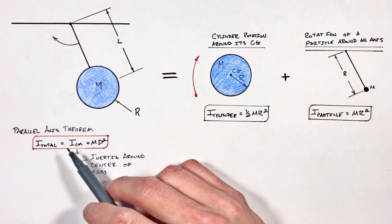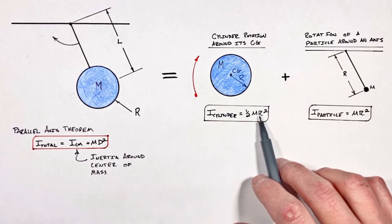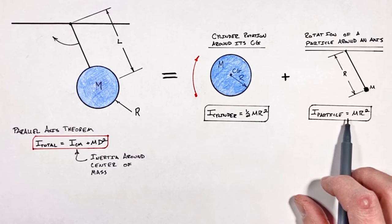So going back to the parallel axis theorem, all we need to do is plug in our values for the inertia of our cylinder around the center of mass and then add to it the inertia of our particle.